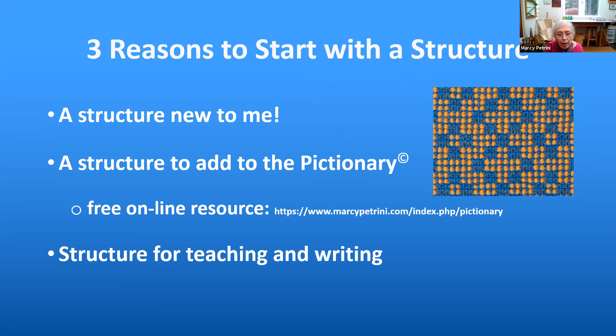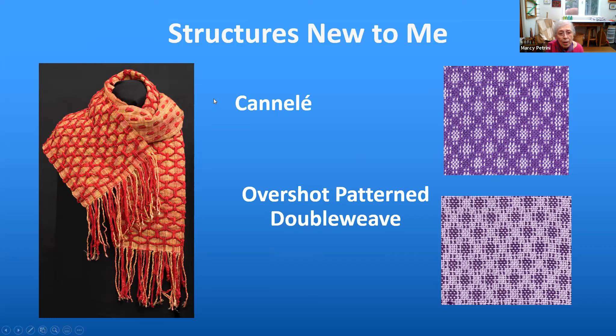A few years back, I was going through some old SSNDs — I think it was to write a 50th anniversary article — and I came across an article on Kennelly. I first made a sample and really liked the way the supplementary yarns float on top of the ground cloth. So I made a little shawl, which I thought was really fun to wear. More recently, I came across a weave called overshot pattern double weave — a friend had shown me samples from a workshop, and then Robin Spady wrote a wonderful issue of Hettlecraft on overshot pattern double weave.